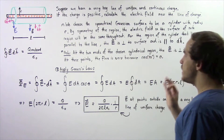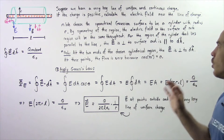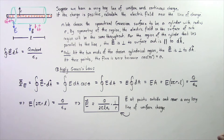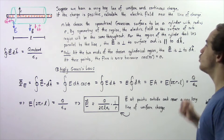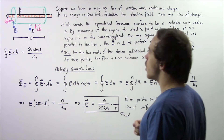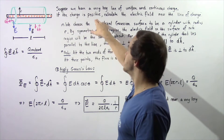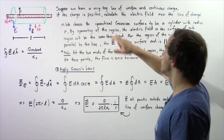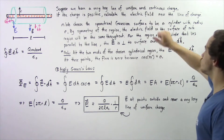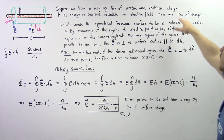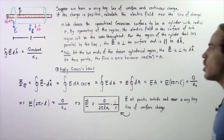Suppose we have a very long thin line of uniform and continuous electric charge. If the electric charge is positive, calculate the electric field near this line of charge.